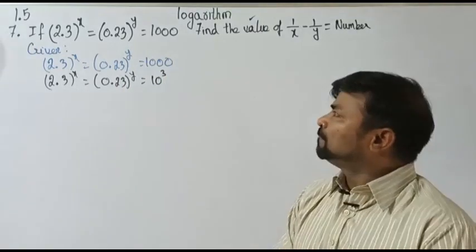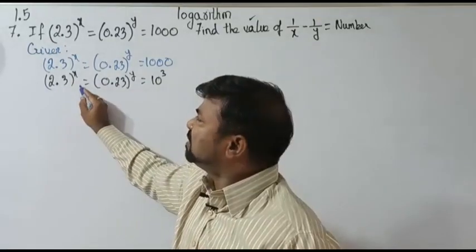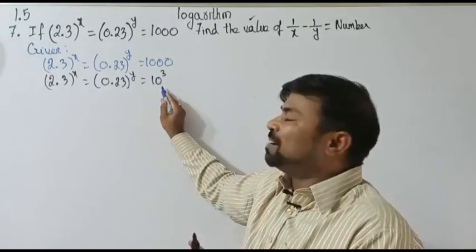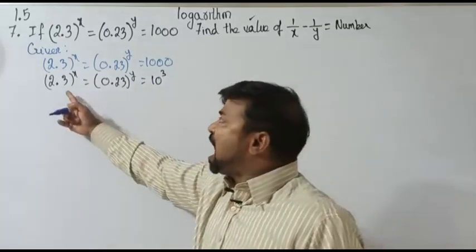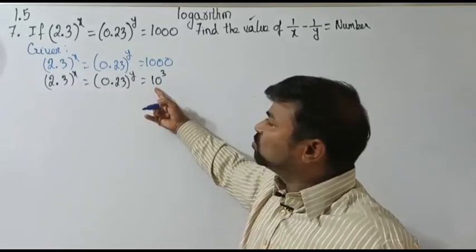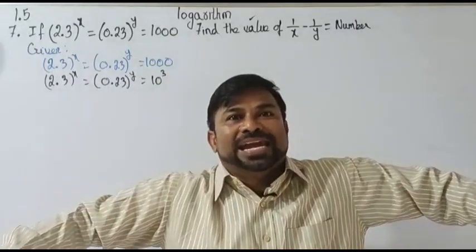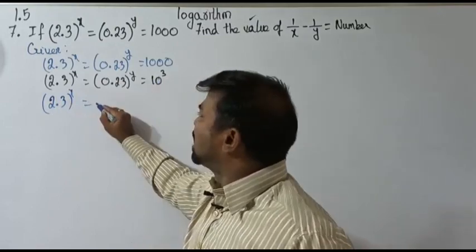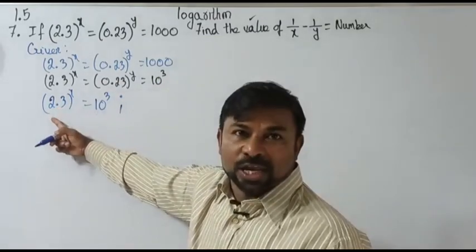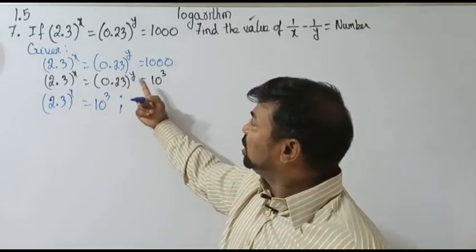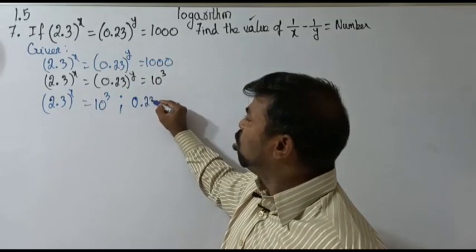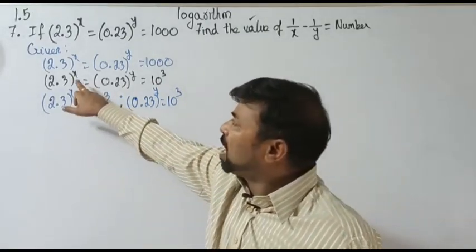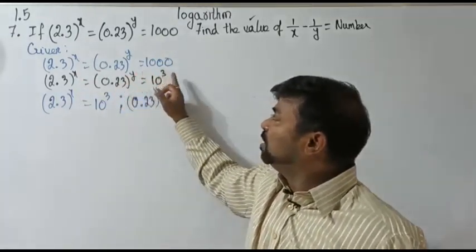We are having an expression with a variable, and this is also a variable, but 10 to the power 3 is completely a constant. So my plan is: I like to equate the first expression with this constant and the second expression with this constant, making it a two-equation summary. So: 2.3 whole to the power x equals 10 to the power 3, and 0.23 whole to the power y equals 10 to the power 3.